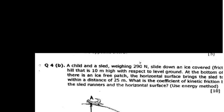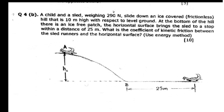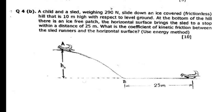Now let's look at a question. A child and a sled weighing 200 newtons slide down an ice-covered frictionless hill that is 10 meters high. At the bottom there is an ice-free patch where the horizontal surface brings the sled to a stop within 25 meters. We need to find the coefficient of friction between the sled and the horizontal surface. From A to B it was frictionless, so we can find the velocity at point B using conservation of energy.